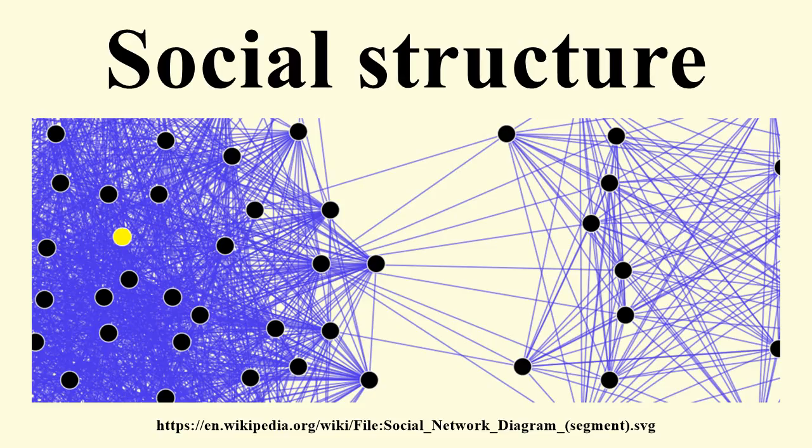On the mesoscale, it is the structure of social network ties between individuals or organizations. On the micro scale, it can be the way norms shape the behavior of individuals within the social system.